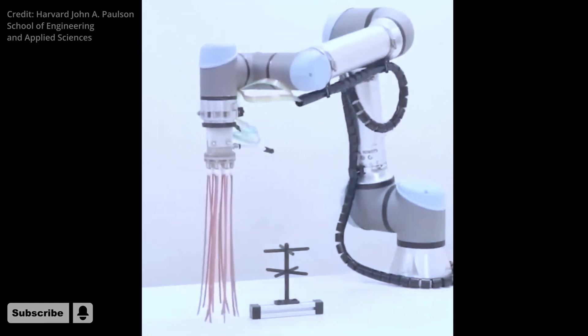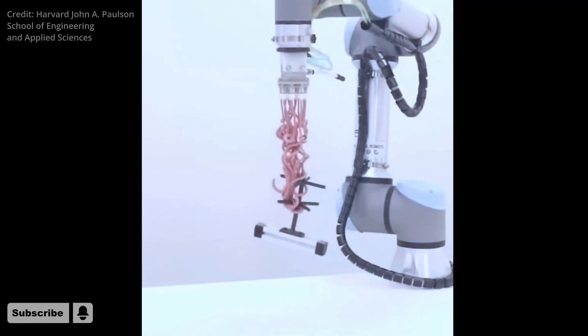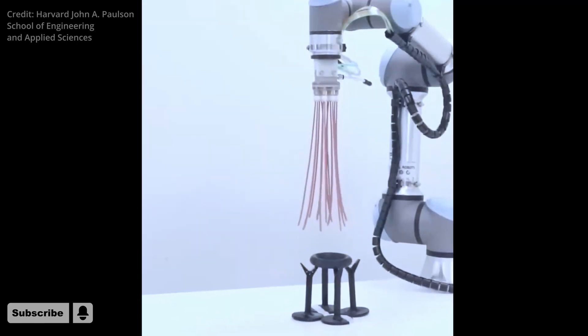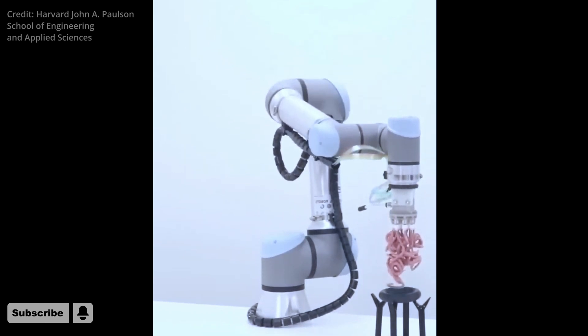Breakthrough tentacle robot revolutionizes gripping. Once more, science fiction is starting to resemble science fact. An octopus, a mess of sentient spaghetti, or those flying tentacle monster bots from the Matrix are all reminiscent of a new soft tentacle robot gripper.